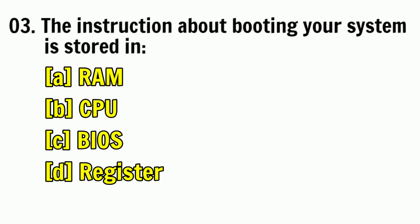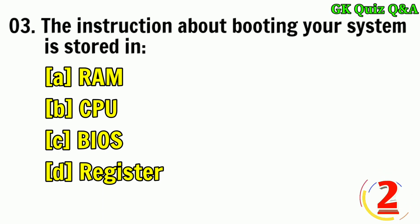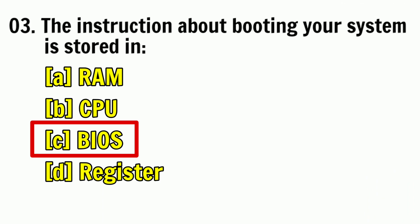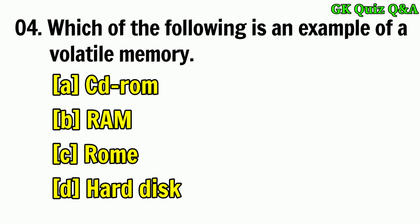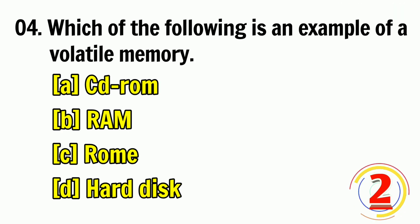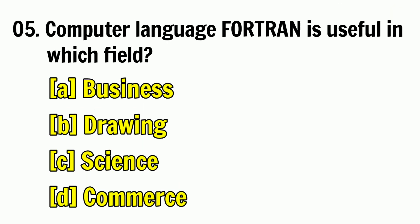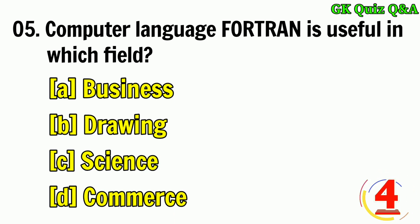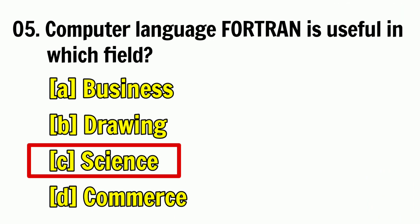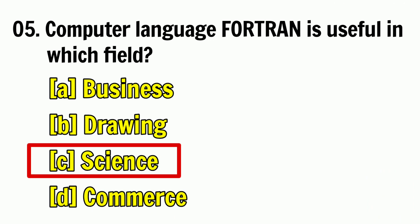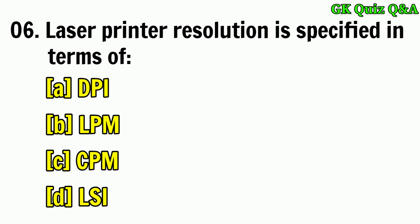The instruction about booting your system is stored in? Answer: C — BIOS. Which of the following is an example of a volatile memory? Answer: RAM.